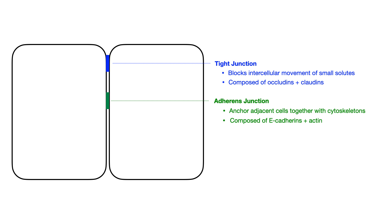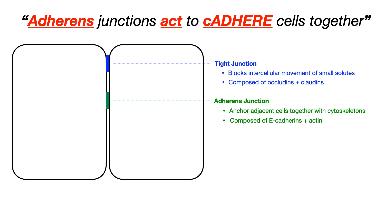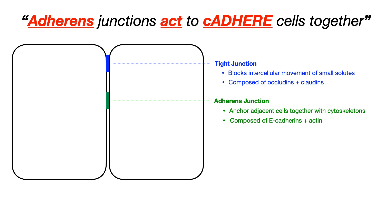Now let's talk about adherence junctions. Adherence junctions anchor adjacent cells together using cytoskeletons. They are composed of two things: e-cadherin and actin. E-cadherin is easy to remember because the name of the junction is adherence. My mnemonic is: adherence junctions act to cadher cells together — act for actin, and cadher for e-cadherin. On test day, if you see e-cadherin or actin, the test writer is focusing on adherence junctions. Very high yield.